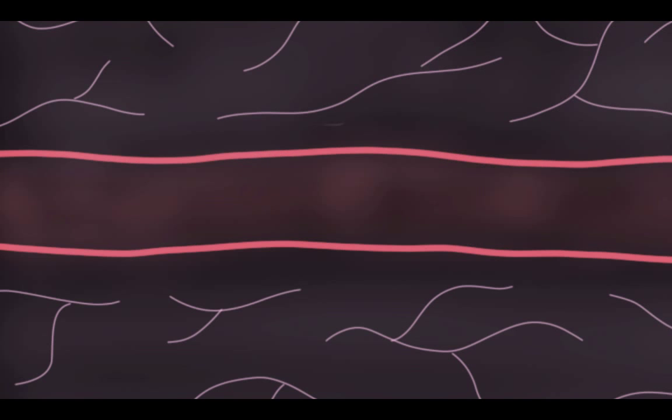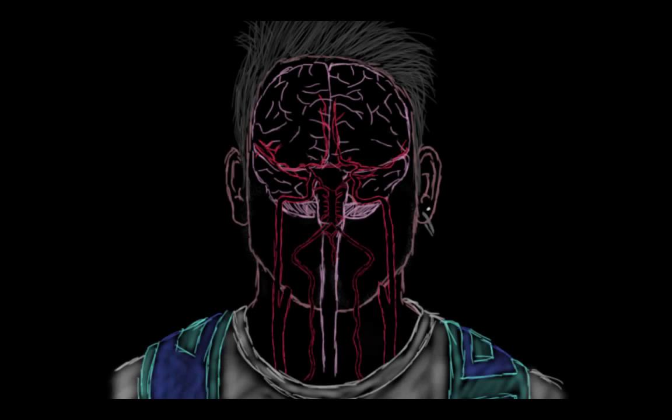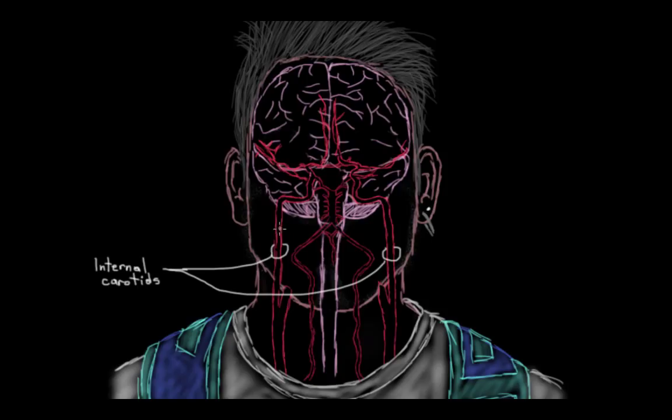So now let's zoom out a little bit to look at some other risk factors. That atherosclerosis we talked about can actually affect these internal carotid arteries, and in fact they often are affected by atherosclerosis. So these are the internal carotid arteries, and you can get that fatty buildup of atherosclerosis within them.